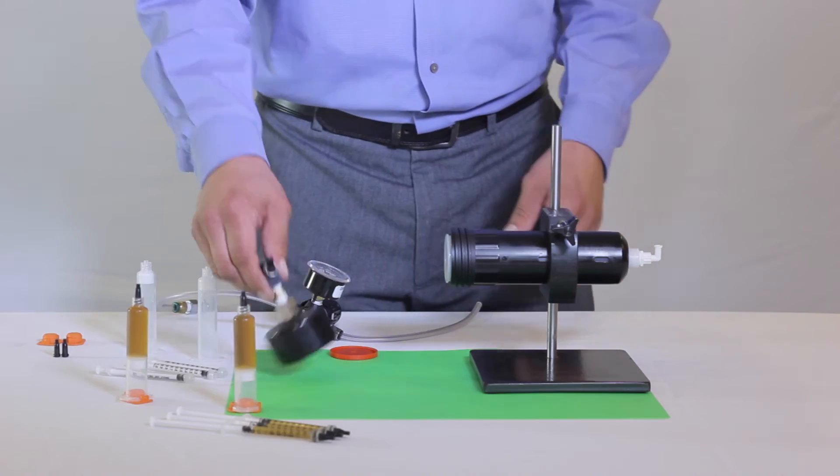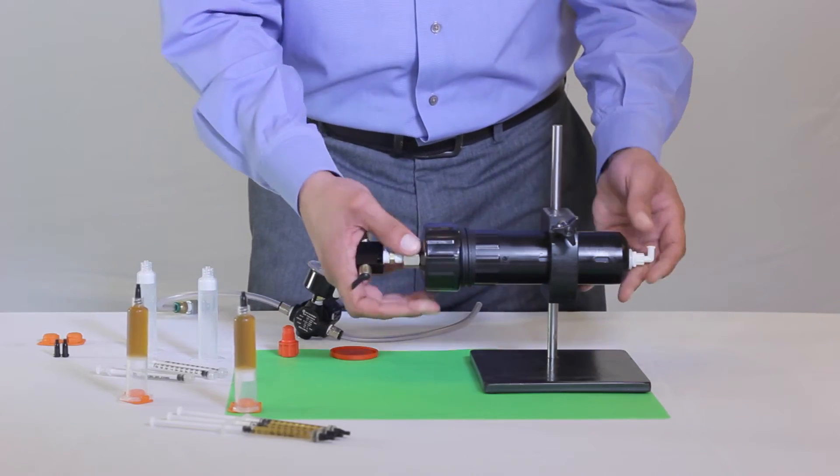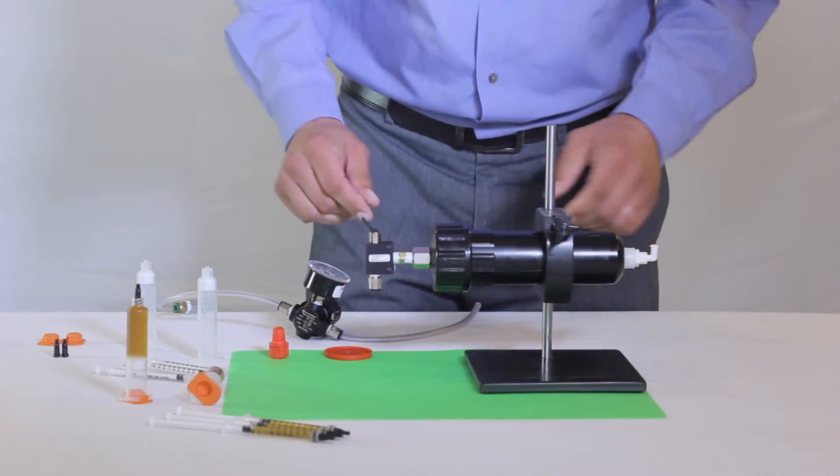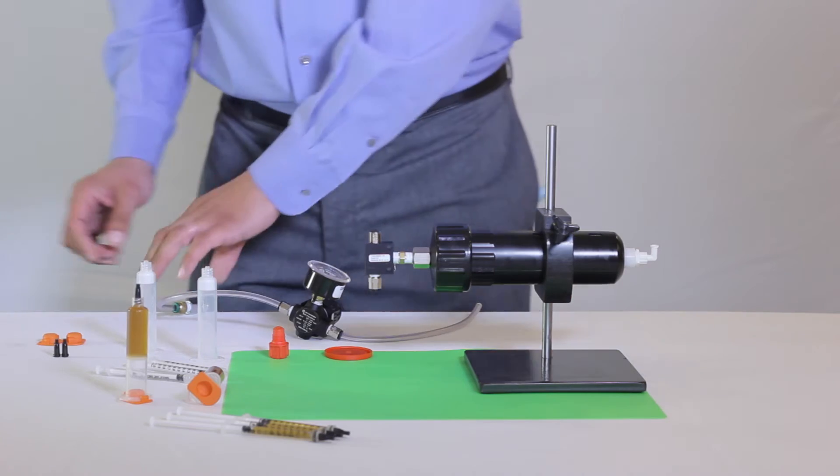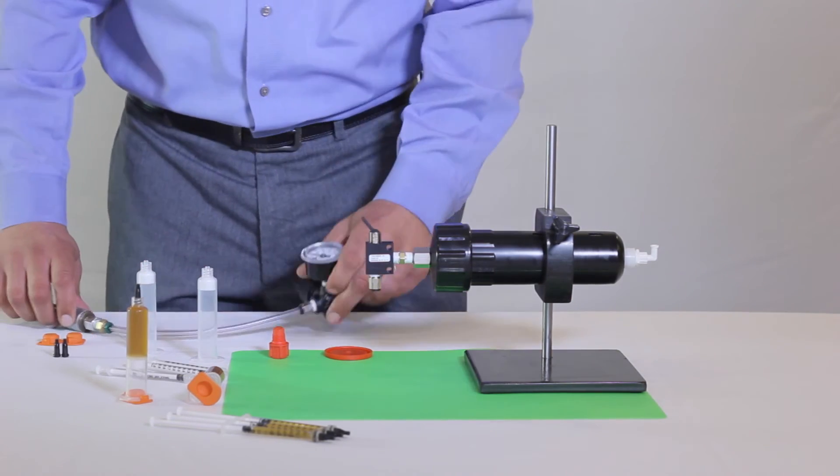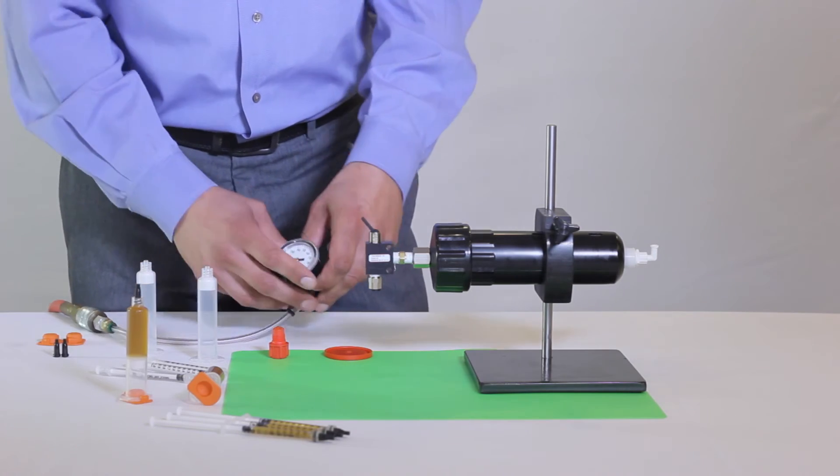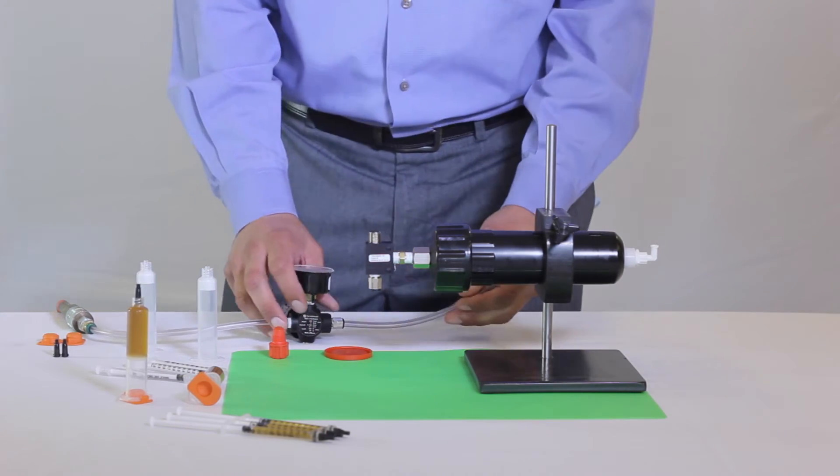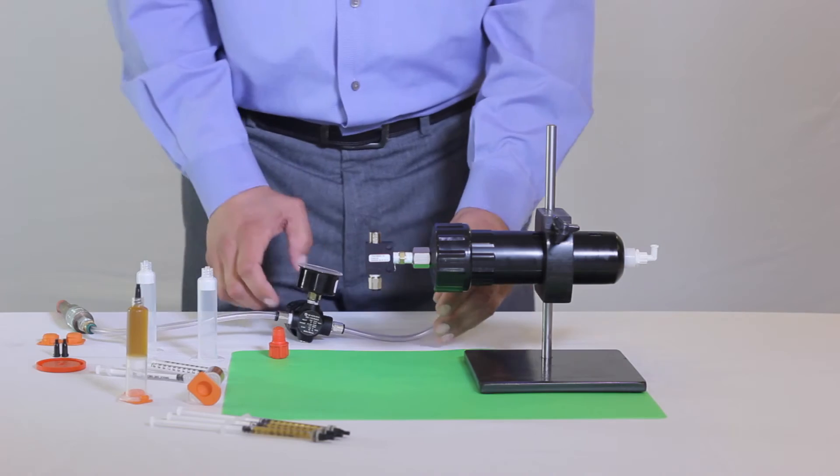Insert the cartridge into the retainer and tighten the cap with the toggle switch. Make sure the external regulator and gauge reads 0 PSI before attaching the airline to the toggle switch. The toggle switch must be in the off position, which is indicated by the switch pointing away from the cartridge.